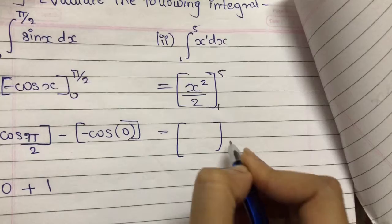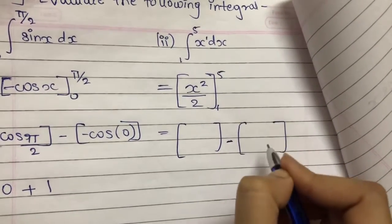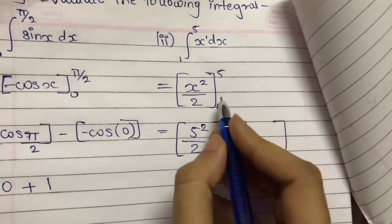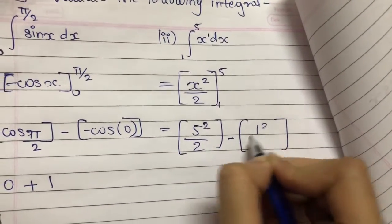After that, you will make two square brackets with minus in between them. At place of x, first you will substitute upper limit, that is pi squared upon 2, then lower limit, that is 1 squared upon 2.